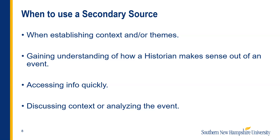When should you use a secondary source? When you're establishing context or themes, gaining an understanding of how a historian makes sense out of an event, when you're looking to access information quickly, and when you're discussing context or analyzing the event. When your interests are focused on one subject but you need to know what else was going on at the time or what happened earlier, you can use a secondary source to find the background material you need. Many secondary sources provide not only information, but a way of making sense out of that information. You should use a secondary source if you wish to understand how a historian makes sense of a particular event, person, or trend, or if you need to find a particular piece of information quickly. Using secondary sources when discussing context or analyzing an event helps give credibility to any assertions that you make.